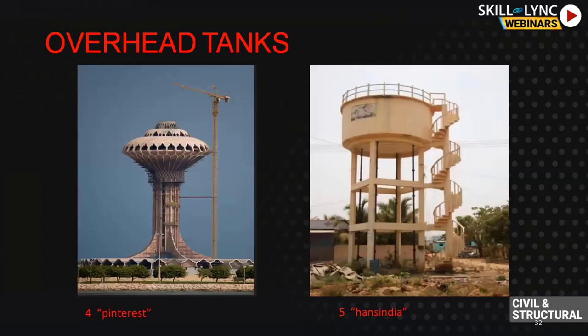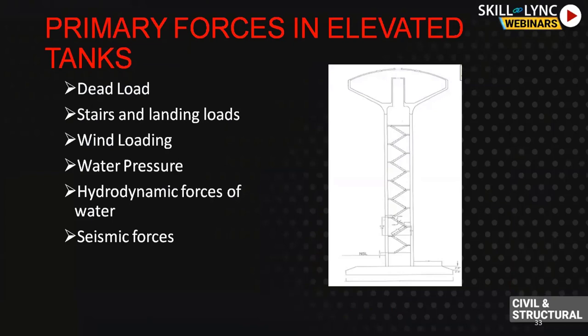Now I'll give a little introduction to elevated tanks. On the left you can see two types of tanks. On the left is a tank in Saudi Arabia — an elevated tank supported only on a shaft, somewhat like a mushroom. On the right is a typical structure in Southeast Asia. This is the staging — the framing is good and they have better energy dissipation. The main difference will be the primary forces acting on underground tanks versus elevated tanks.